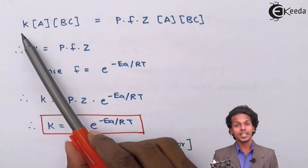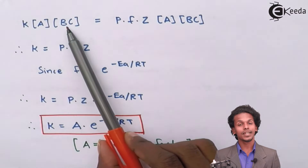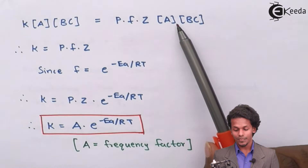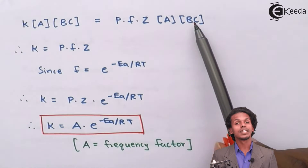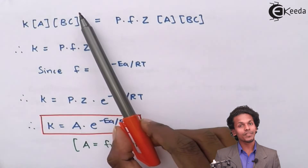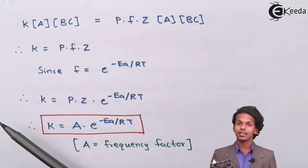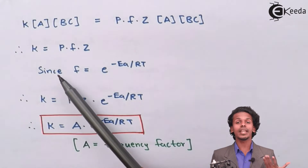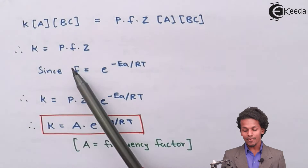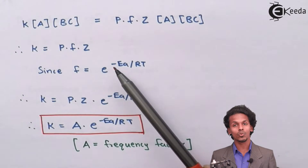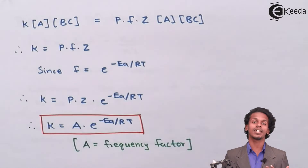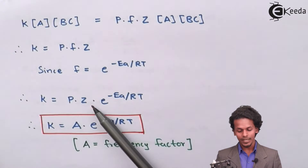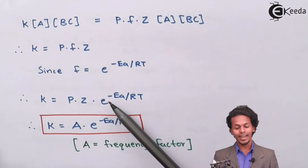So we have: K into concentration of A into concentration of BC equals P into F into Z into concentration of A into concentration of BC. The concentration terms cancel out on both sides, and what is left is: K equals P into F into Z. We had initially calculated that F equals e raised to minus Ea upon RT.